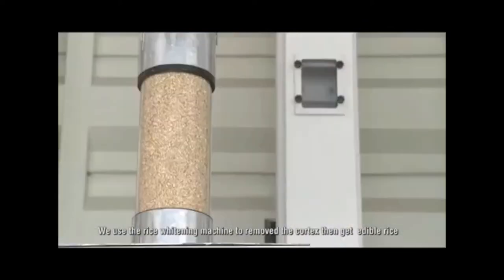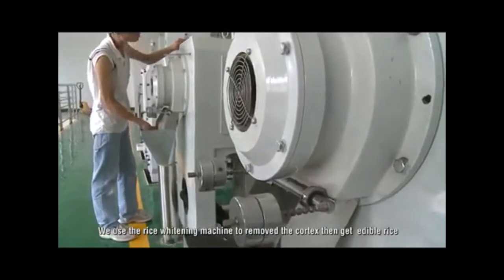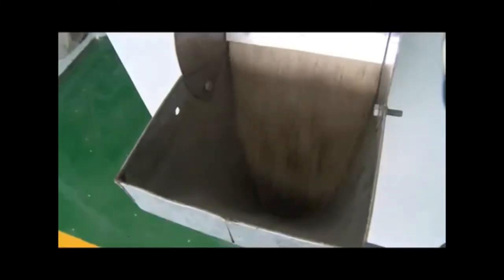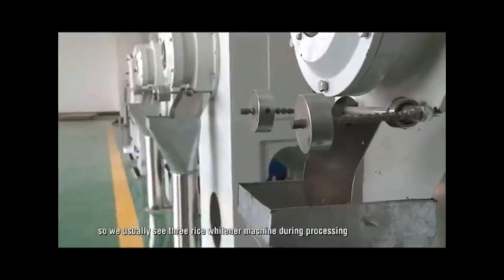We use the rice whitening machine to remove the cortex, then get edible rice. This stage needs three times whitening. So we usually see three rice whitening machines during processing. The whitening part is the most important part.